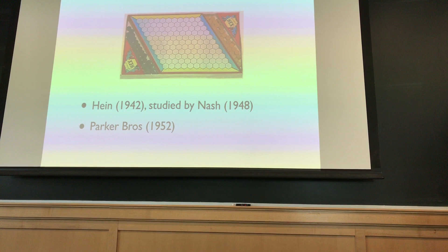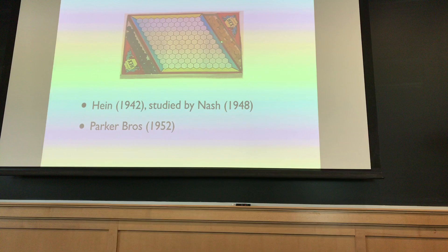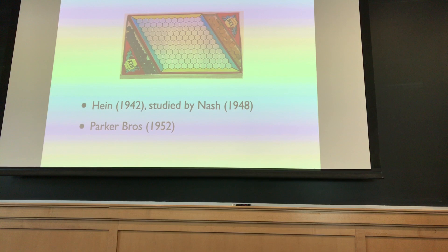Let me first start off with a game. There's this game called Hex, which is played on a board with hexagonal tiles. It's a very simple game — you have a white player and a black player, and the idea is to form a chain of markers across the board: white goes from one direction, black goes from the other. It was invented in the 1940s, and Parker Brothers made a real game out of it in the 1950s.